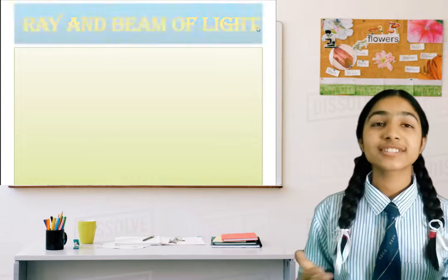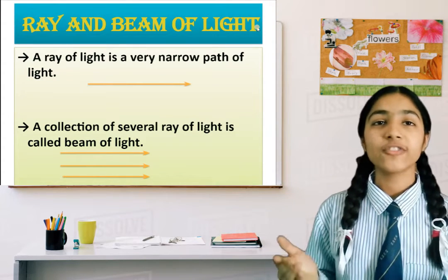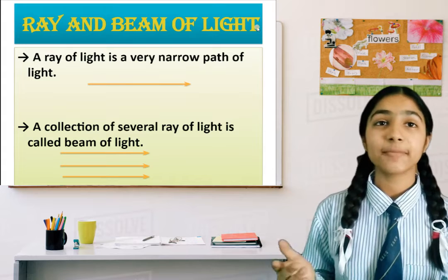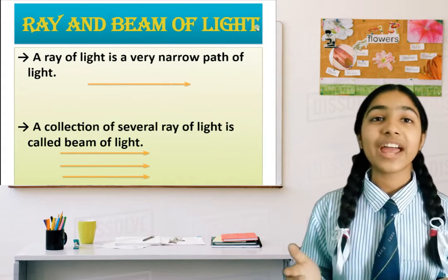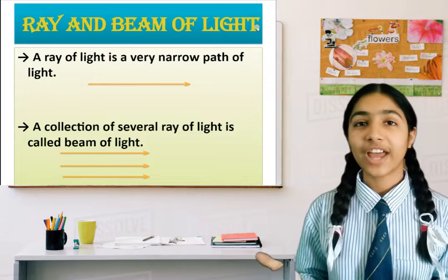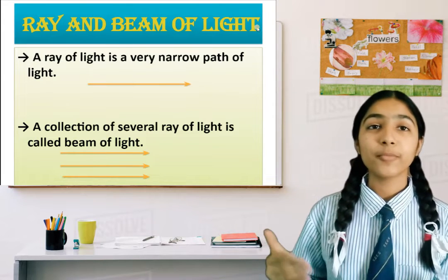Now let's discuss ray and beam of light. A ray of light is a narrow path of light represented by an arrowhead. A beam of light is a collection of several rays of light, represented by two or more arrowheads.